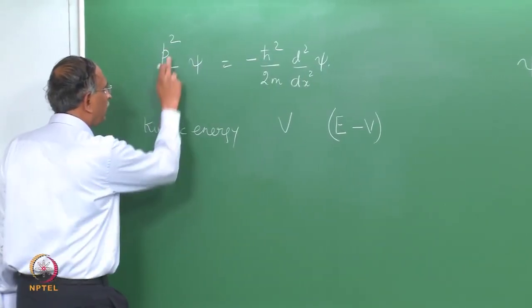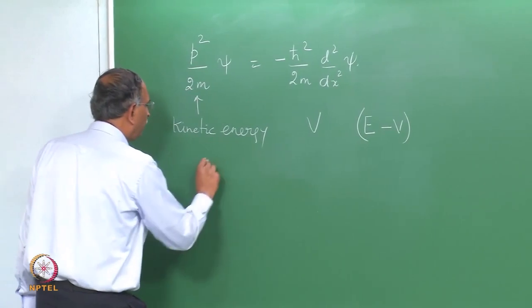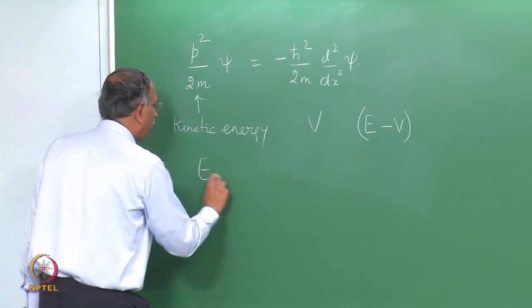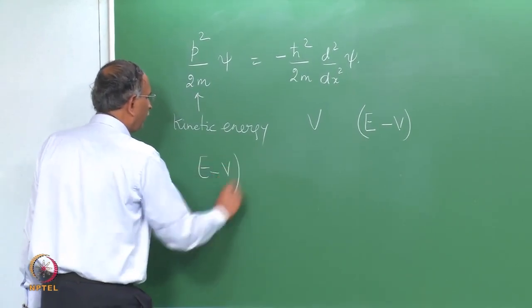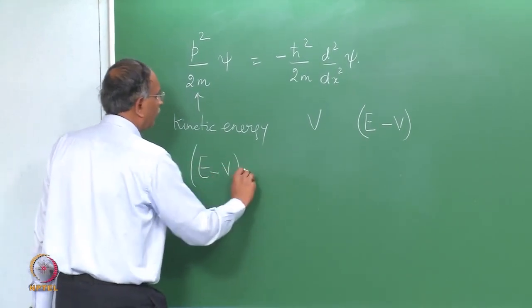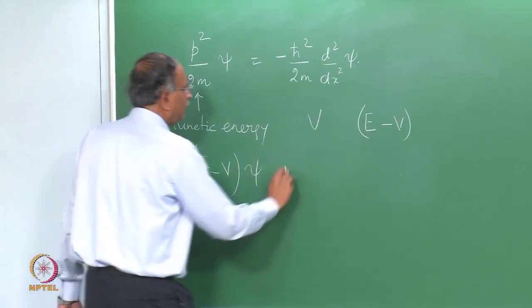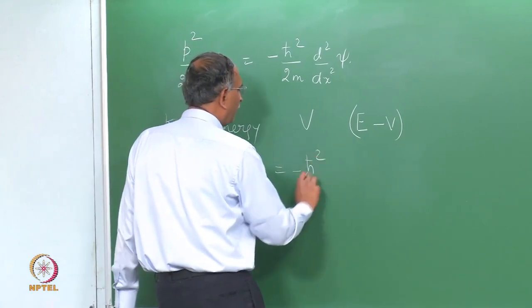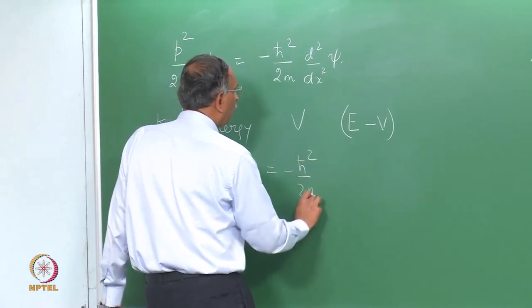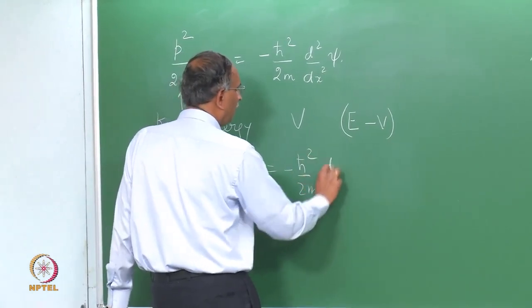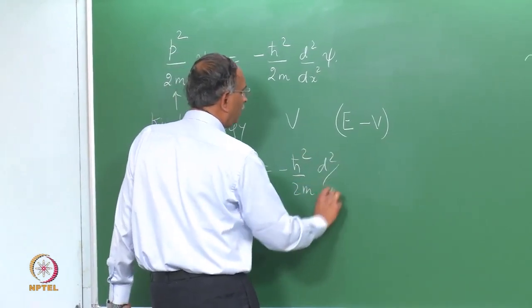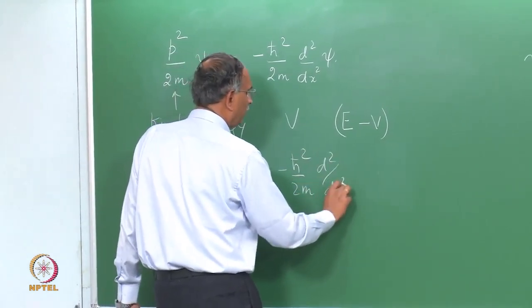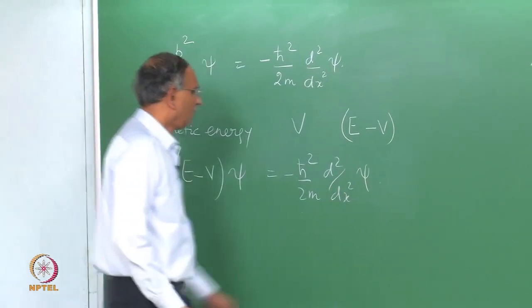Therefore p²/2m acting on psi gives (E − V) · psi, yielding: −h-bar²/2m · d²(psi)/dx² = (E − V) · psi.